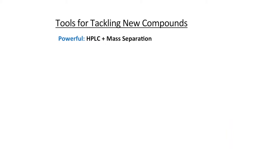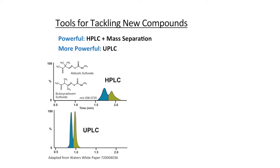Things get more powerful when we consider the capabilities of UPLC versus HPLC. UPLC offers increased sensitivity and better selectivity, as well as all occurring on a more rapid analysis time, which never goes amiss.